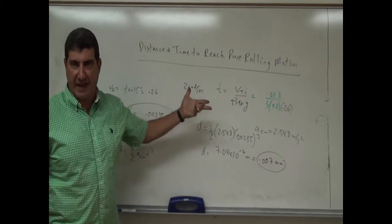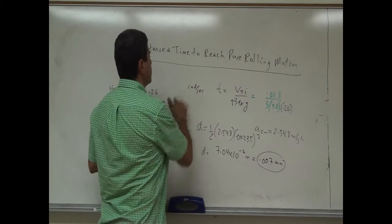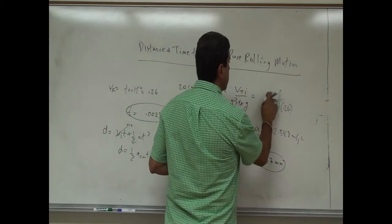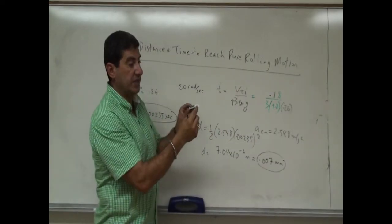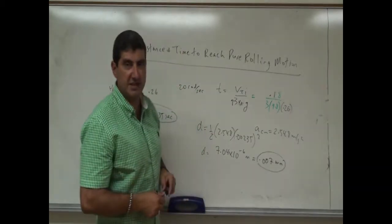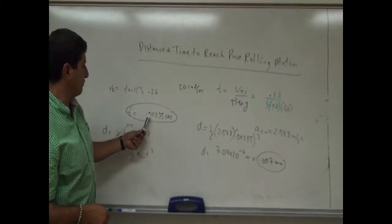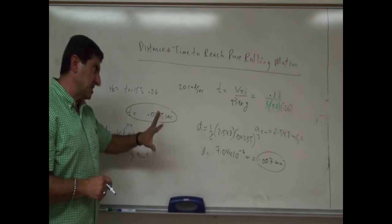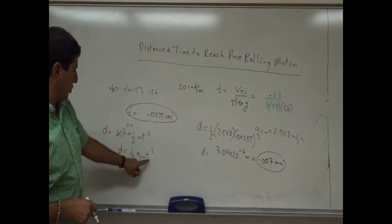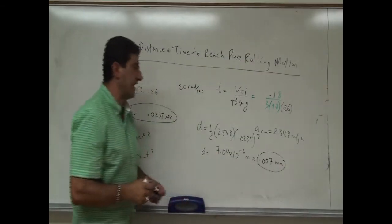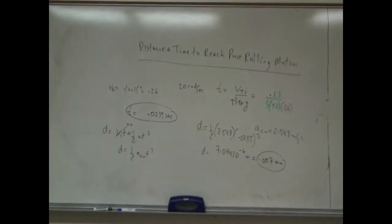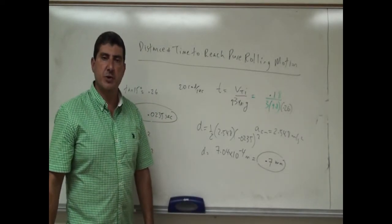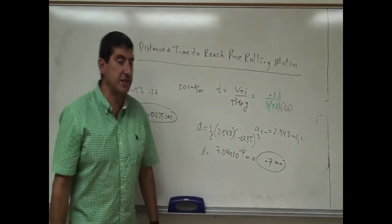If I spin it 10 times faster — say 20 rad/s — V_tan_initial becomes 0.18 m/s because the marker's radius is small. The time becomes 0.0235 seconds, about 23 milliseconds, which is more reasonable. The distance is then about 7 mm. When I actually do it, within about 1–3 mm it has already achieved pure rolling motion, so this is a more realistic result.